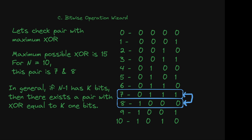Let's check pairs with the maximum XOR. The maximum possible XOR is 15 in this case. For n equal to 12, the pair is 7 and 8. If you pick 7 and 8 and take the bitwise XOR, all 4 bits will be 1, giving a result of 15. In general, if n-1 has at least k bits, then there exists a pair with XOR equal to k ones.